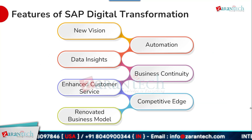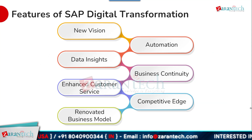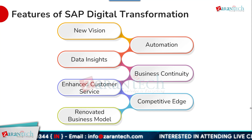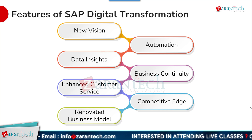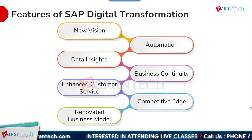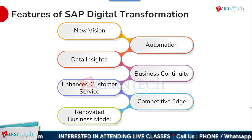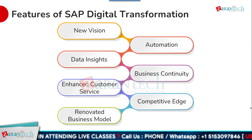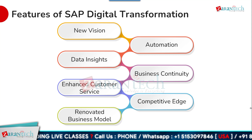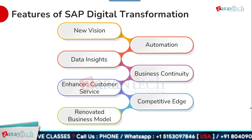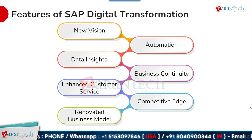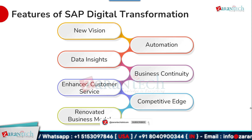Let us dive into the features of SAP Digital Transformation. SAP Digital Transformation offers a range of features that enables organizations to reimagine their businesses for the digital age. It provides a new vision for organizations, which allows them to innovate and adapt to the changing market conditions. Automation is a key feature that streamlines processes and improves efficiency. SAP Digital Transformation also enables organizations to gain valuable data insights informing strategic decision-making. It ensures business continuity, minimizes disruption, and enables the organization to operate smoothly.